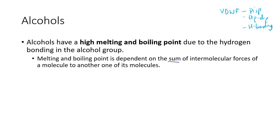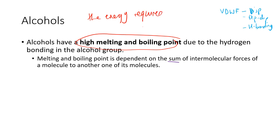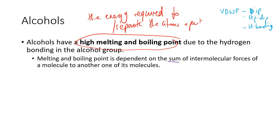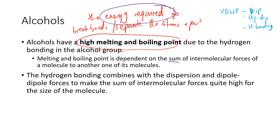Alcohols have all three van der Waals forces, so their sum of van der Waals forces is quite large. When explaining melting and boiling point, you need to talk about the energy required to break bonds between atoms and separate them apart. That energy requirement is represented by the temperature. The hydrogen bonding combines with dispersion and dipole-dipole forces to make the sum of intermolecular forces quite high for the size of the molecule.